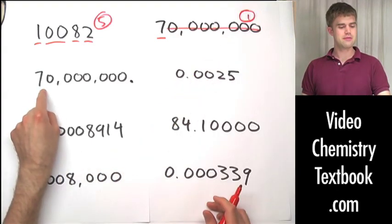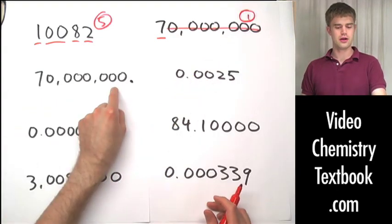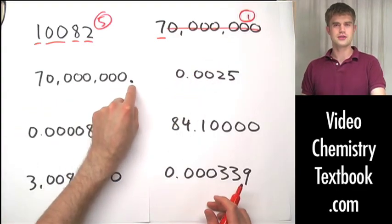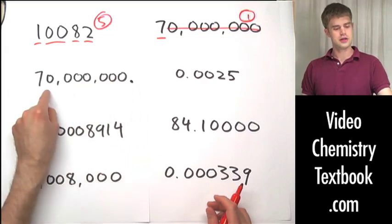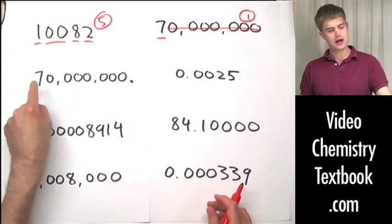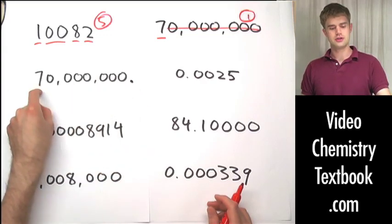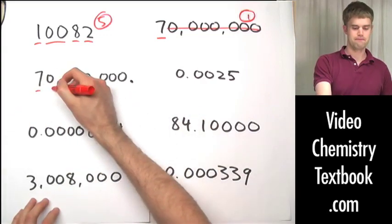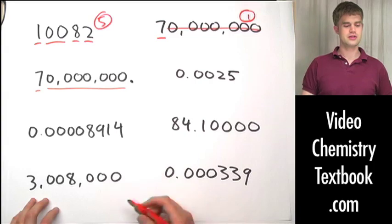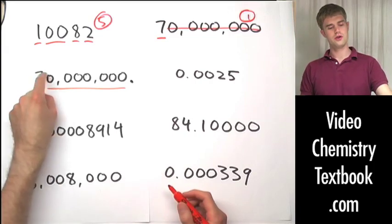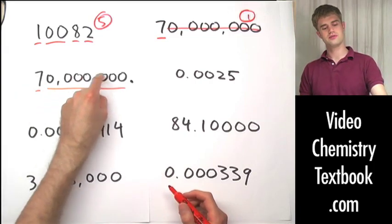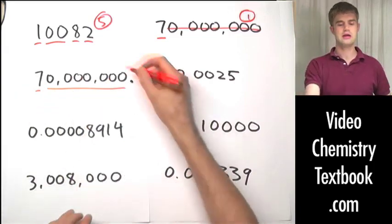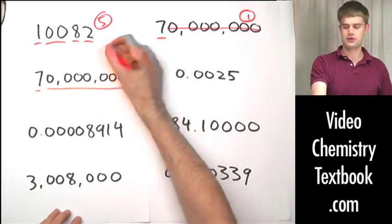Now here we have the same number, 70 million, but there is a decimal point after it. Zeros to the right of a non-zero digit are significant if there's a decimal point. So there are 8 significant figures here.